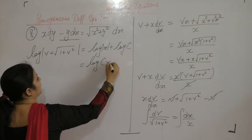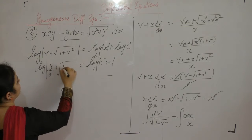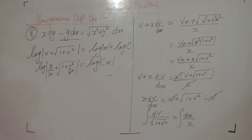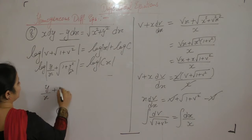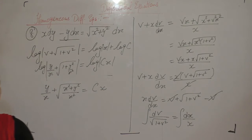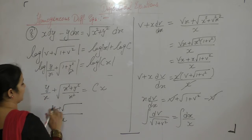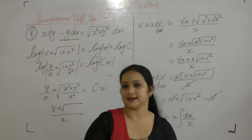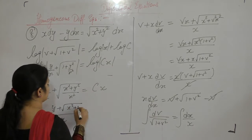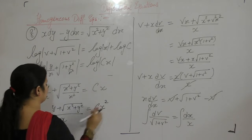Using log(a) + log(b) = log(ab), and substituting v equals y upon x, we get log of y upon x plus square root of 1 plus y squared upon x squared equals log of cx. Taking x as common, this becomes y plus square root of x squared plus y squared equals cx squared.